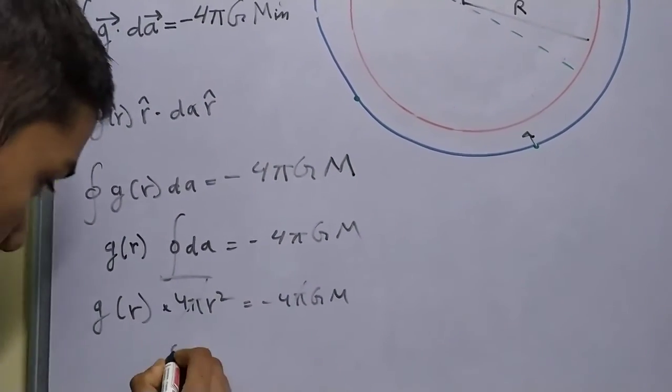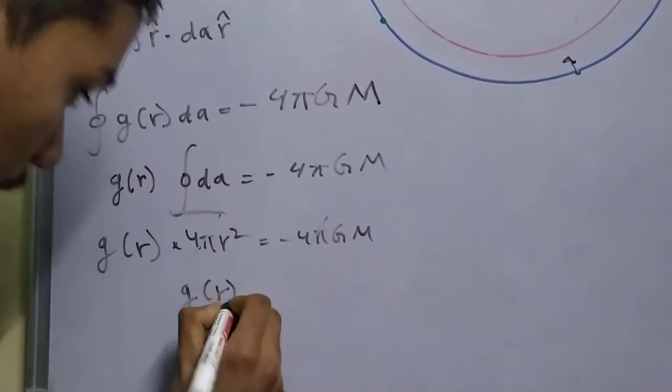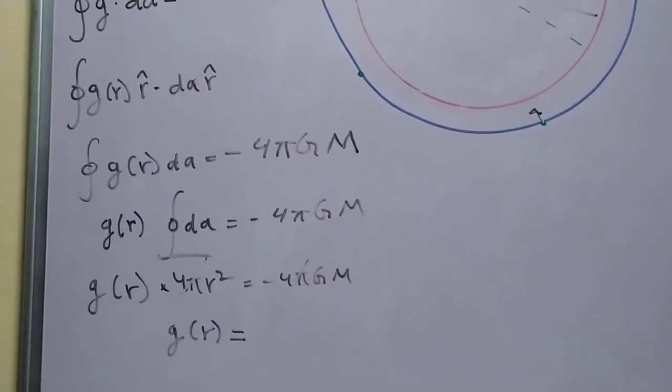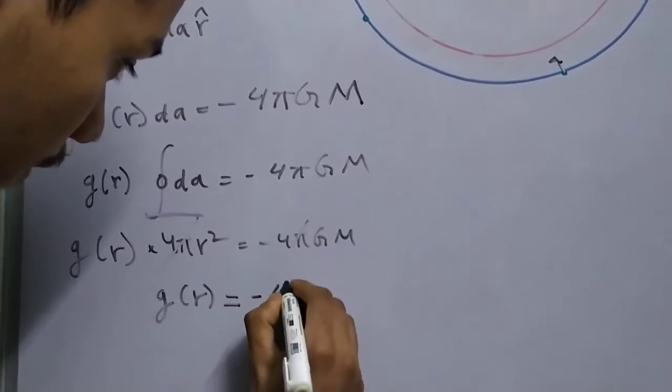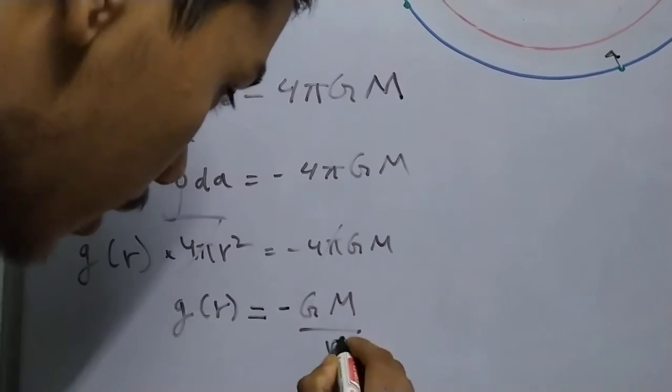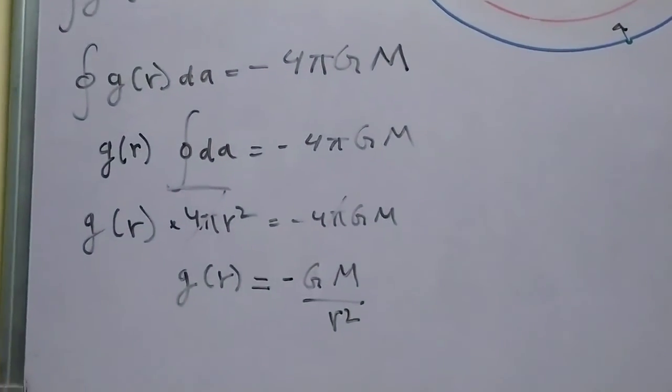4 pi and 4 pi cancel out, we are left with G of R, the magnitude of G, the function of R, this G of R is minus G M upon R square.